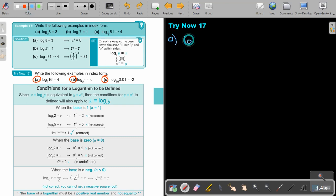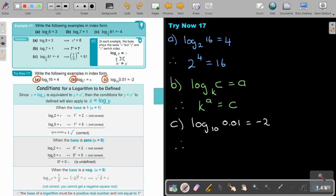Let's start with number A. Log 2, 16 is equal to 4. So therefore, keep the base and just swap this two. So therefore 10, 0.01 equals negative 2. So therefore 10 to the power of swap, negative 2 equals 0.01.